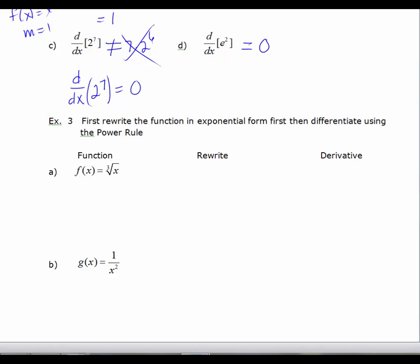Now what we'd like to do is look at some scenarios in example 3 where the original function is not set up to use the power rule, but if you manipulate and rewrite the function, you can use the power rule. So we want to write these in the form of x to the n. So if you have f(x) equals the cube root of x, that's f(x) equals x to the 1/3.